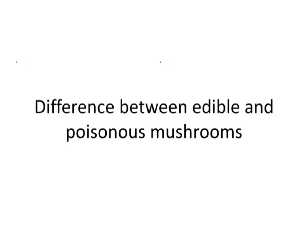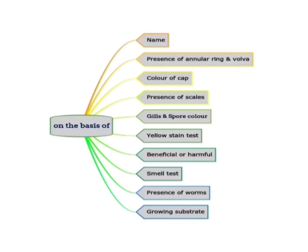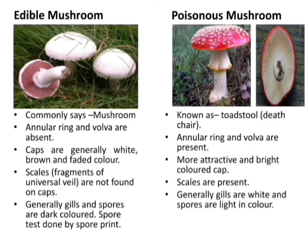Difference between edible and poisonous mushrooms on the basis of name, presence of annular ring and volva, color of cap, presence of scales, gills and spore color, yellow stain test, beneficial or harmful effects, smell, presence of worms, and growing substrate. Edible mushrooms are commonly called mushrooms, and poisonous mushrooms are known as toadstools. Edible mushroom ko generally mushroom hi kehte hain and poisonous mushroom ko toadstool.